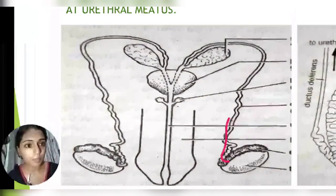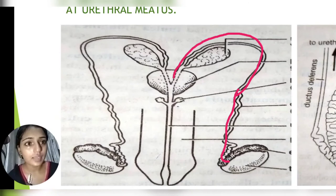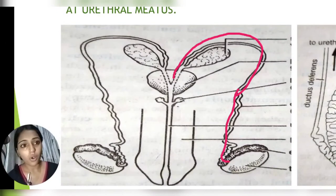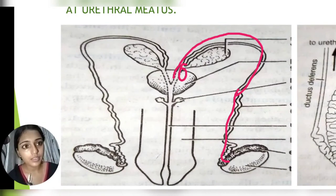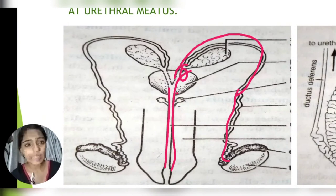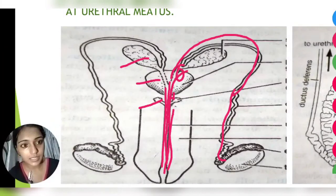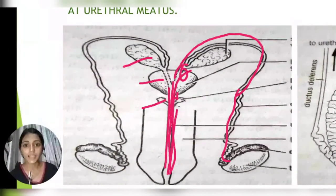From the epididymis, it opens up into the vasa deferens. The vasa deferens then goes and terminates near the seminal vesicle. The seminal vesicle also opens up into this area and forms the ejaculatory duct, which is called the urethra. Other glands — the prostate gland, bulbourethral or Cowper's gland, and the seminal vesicle — all open here, and this tract ends at the urethral meatus.